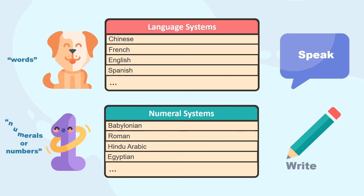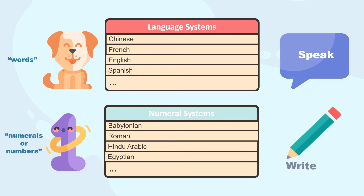In math, when we write numbers, we can represent or draw them by choosing from the many numeral systems. We could choose to represent numbers using the Babylonian numeral system, the Roman numeral system, or one of the many others. Let's take a deeper dive at these different numeral systems — and keep an eye out to see if you can spot which numeral system we use today.